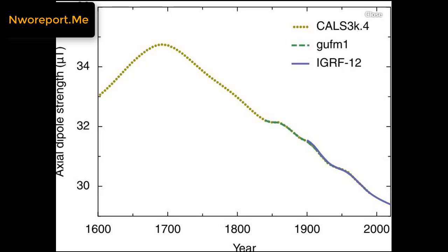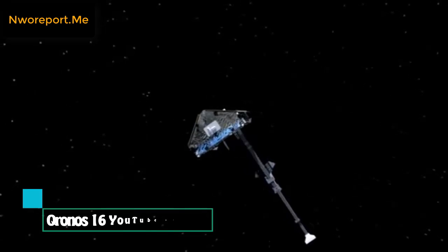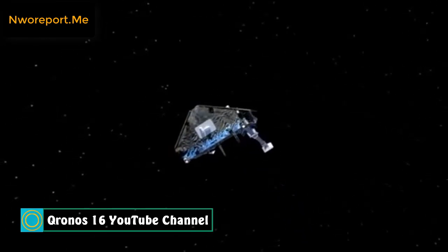Previously scientists told us that the magnetic field was weakening about 5% every 100 years. But now we're being told that the data from the swarm satellite indicate that the rate of decay is now 5% per decade.